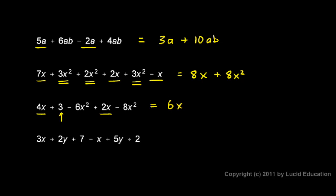The 3 here has no variable part. There are no other terms that are like that. No other terms without any variable part. But look at this negative 6x squared and 8x squared. Those are both x squared terms. So those combine.